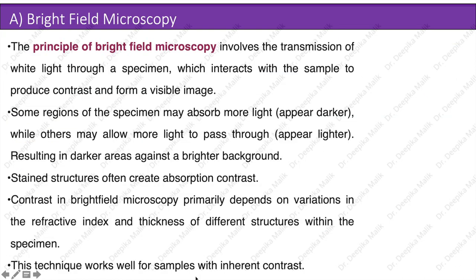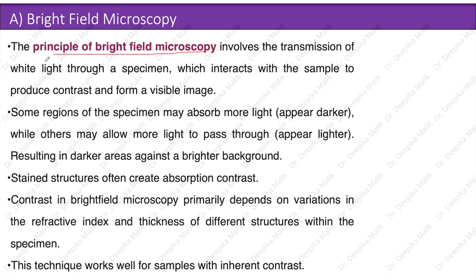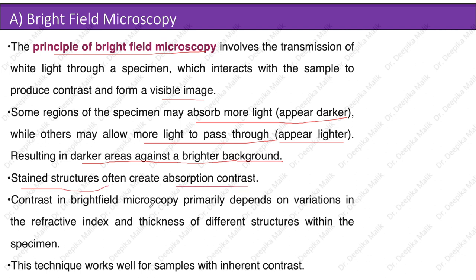Bright field microscopy involves the transmission of white light through a specimen, which interacts with the sample to produce contrast and form a visible image. Some regions may absorb more light and appear darker, while others appear lighter, resulting in darker areas against a brighter background. Stained structures create absorption contrast. Contrast in bright field microscopy primarily depends on variation in the refractive index and thickness of different structures within the specimen. This technique works well for samples with inherent contrast.